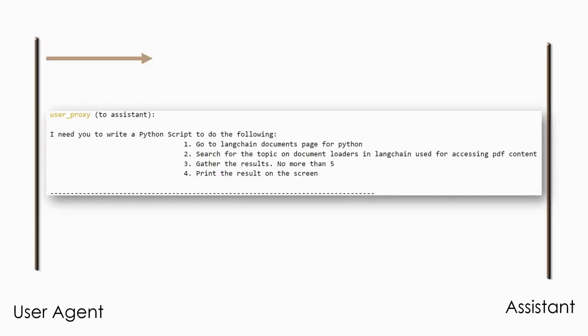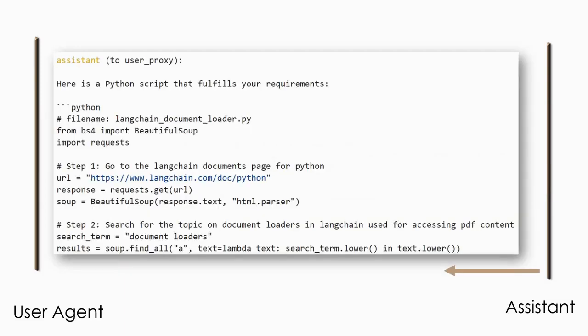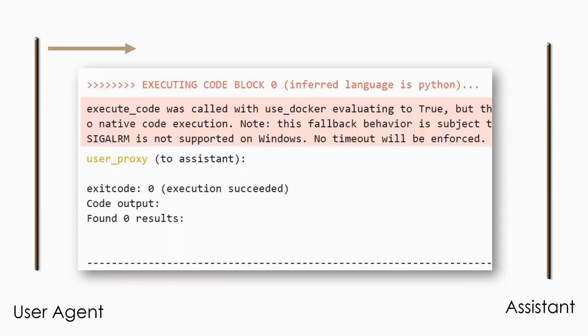This is a snapshot of the output window in which the task is sent from the user proxy to the assistant. The assistant replies to the user proxy with the Python script to get the result. The code is received by the user proxy, which then tries to execute it. It executes using native code execution because it was called with useDocker evaluating to true but could not find it.